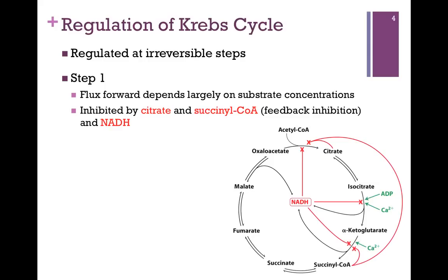Let's look at the regulation of the cycle. It is regulated at each of the three irreversible steps. Our first irreversible step is step one. Flux forward is dependent largely on substrate concentrations, so there's more of a need to down-regulate. Step one is inhibited by both citrate and succinyl-CoA — these are each examples of feedback inhibition. Citrate will shut down its own synthesis, but only if we're not utilizing the citrate; otherwise it will not build up in concentration. Similarly, succinyl-CoA can only build up if we're not using it in subsequent steps, and it also acts as an inhibitor for step one.